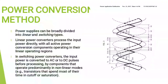Power supplies can be broadly divided into linear and switching types. Linear power converters process the input power directly. In switching power converters, the input power is converted to AC or to DC pulses before processing by components that operate predominantly in non-linear modes — for example, transistors that spend most of their time in cutoff or saturation.